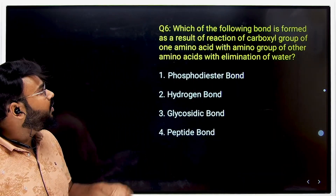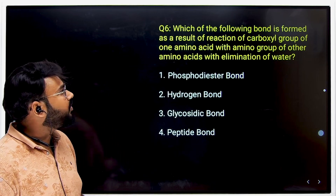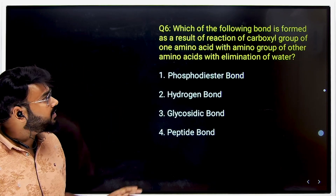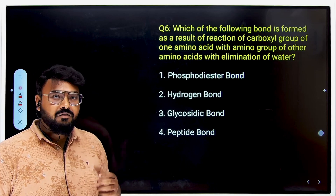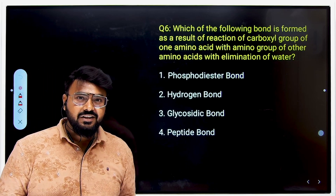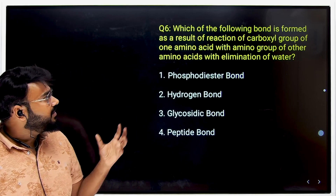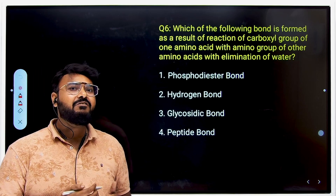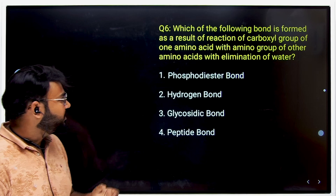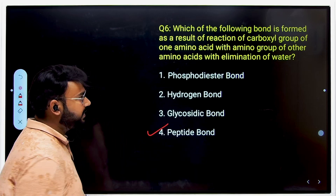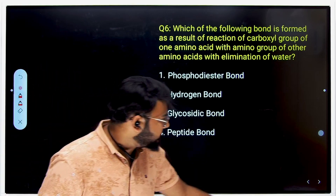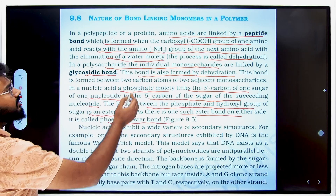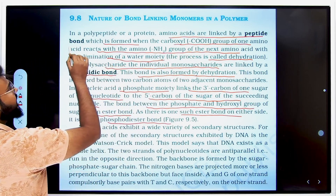The next question: which bond is formed by the reaction of the carboxyl group of one amino acid with the amino group of another? We know peptide bonds are formed by dehydration — the amino group loses H and the carboxylic group loses OH, forming a CO-NH linkage. The answer is a peptide bond.